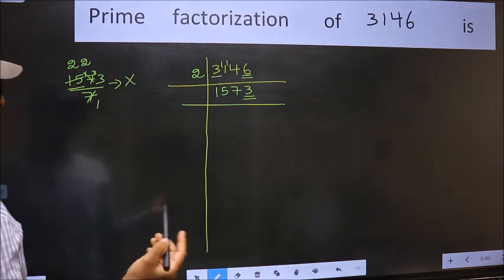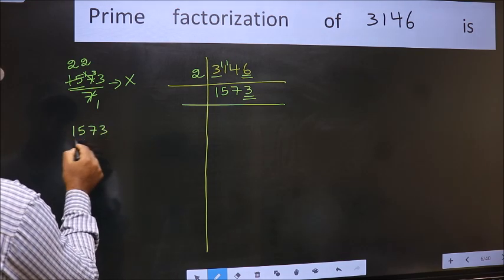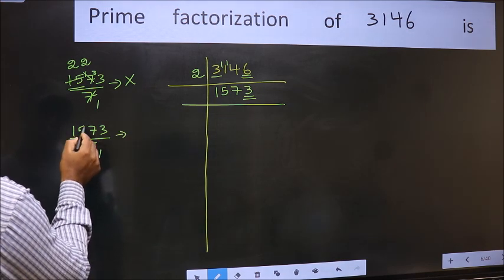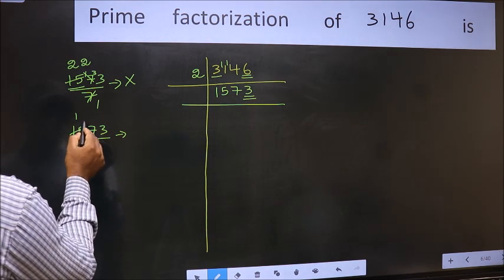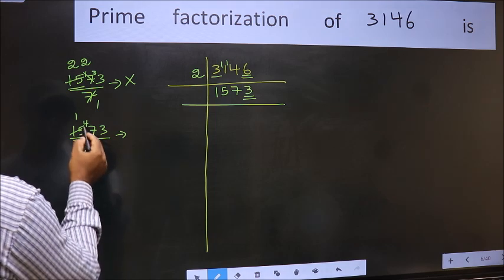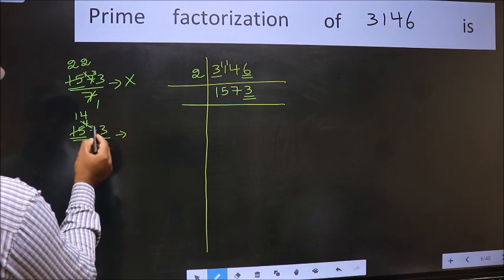Next prime number, 11. Our number close to 15 in 11 table is 11, 1's 11. 15-11, 4, 4 carried forward 47. Our number close to 47 in 11 table is 11, 4's 44. 47-44, 3.